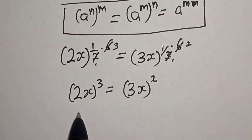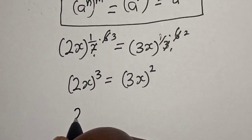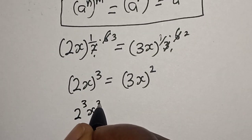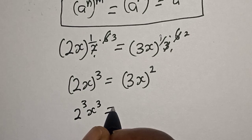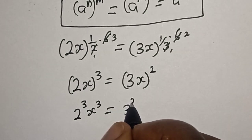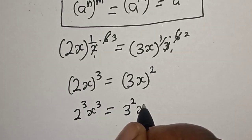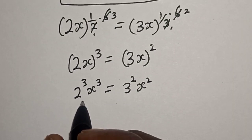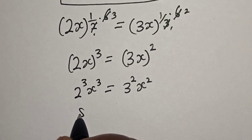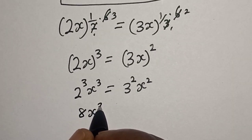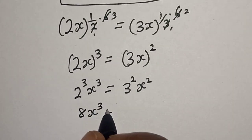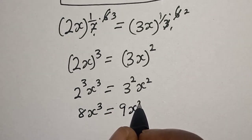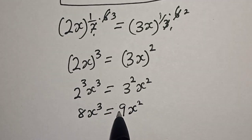Now let's expand the brackets. We have 2 raised to power 3, which is 8, times x raised to power 3, is equal to 3 raised to power 2, which is 9, times x squared. So we get 8x³ = 9x².